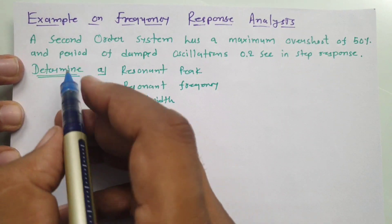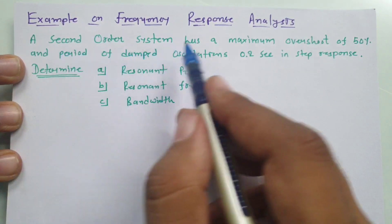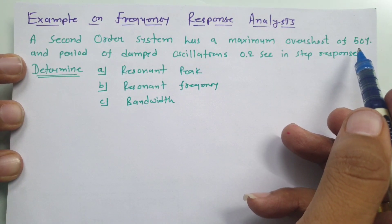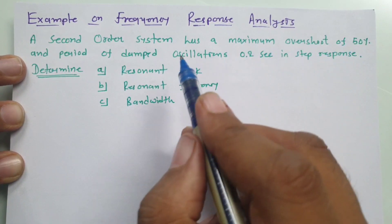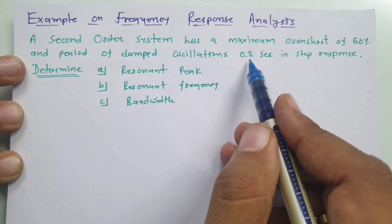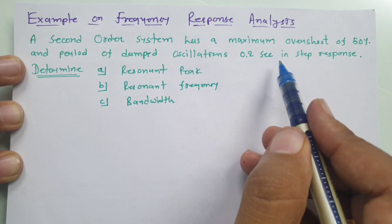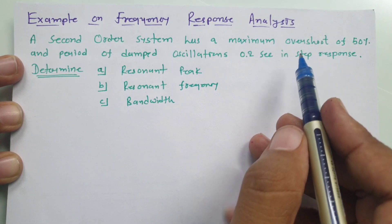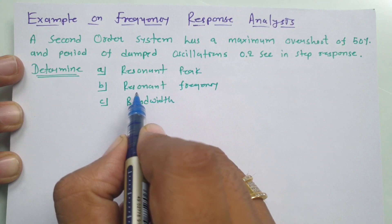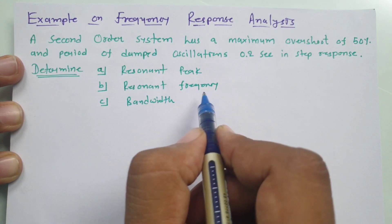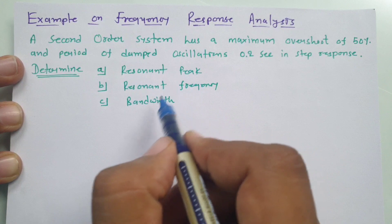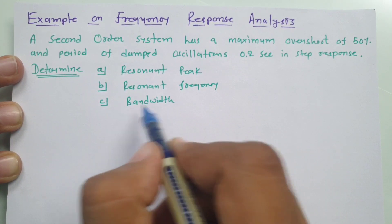The question involves a second-order system with a maximum overshoot of 50%, and a period of damped oscillation of 0.2 seconds for the step response. We are asked to identify the resonant peak, the resonant frequency, and the bandwidth.